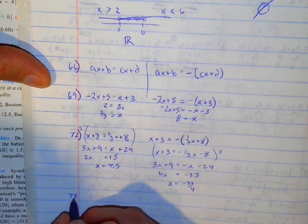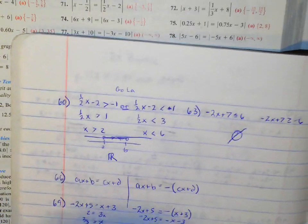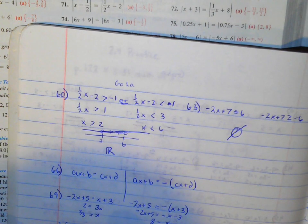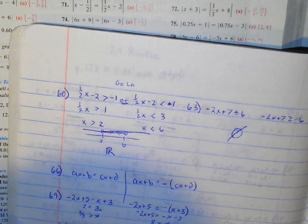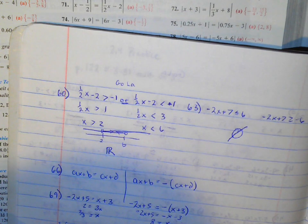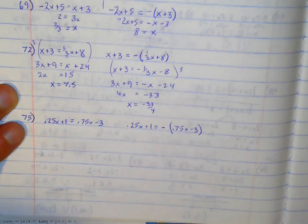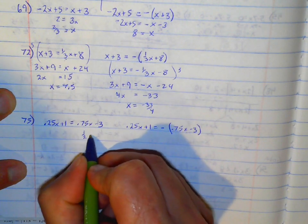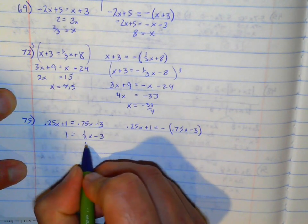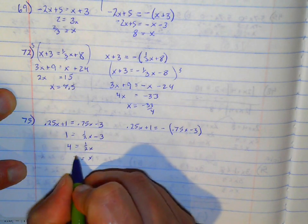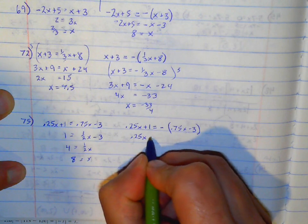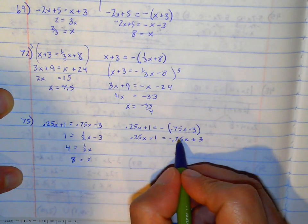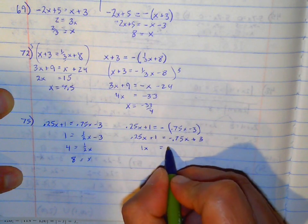Number 75. One equation equals the original and the other equals the negative. Subtract 1/4 over to give 1/2. Add 3 over and multiply by 2. Adding over gives x, subtracting over gives 2 — so x = 2 and x = 8.